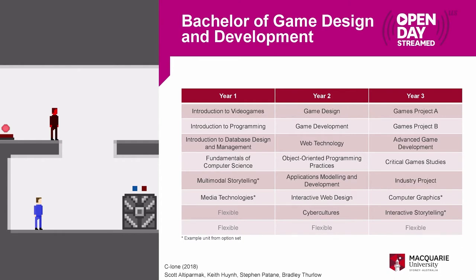Here's a broad outline of the Bachelor of Game Design and Development. It's a three-year degree and it's almost all specified — we've crammed every last game thing in here across all three themes: game design units, game development units, and game studies units. There are four flexible units where you can take any other unit you like within the university. I usually recommend students think about taking a minor — maybe creative writing, music, programming, or entrepreneurship — all of which would help with your games career.